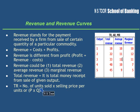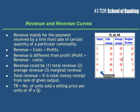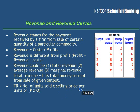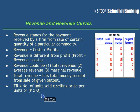Total revenue is equal to number of units sold multiplied by selling price per unit. So here, number of units sold is five units, multiplied by selling price per unit. Price into quantity gives us the total revenue.